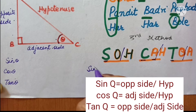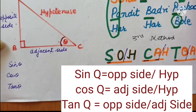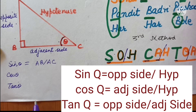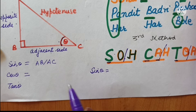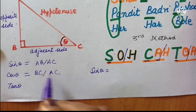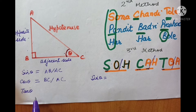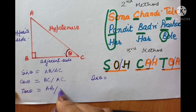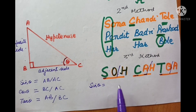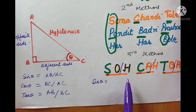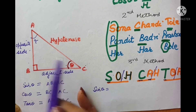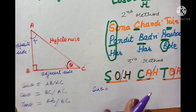Sin theta equals opposite side upon hypotenuse — opposite side means AB upon hypotenuse AC, so sin theta equals AB upon AC. Cos theta: A means adjacent side BC, hypotenuse is AC — same as curly brown hair. Tangent: O means opposite side AB, A means adjacent side BC. So-ka-to-wa is also useful because there is no confusion of perpendicular or base — if you are finding values of alpha, this becomes the opposite side and that becomes the adjacent side.